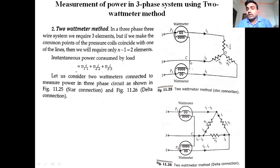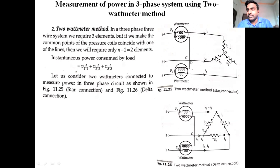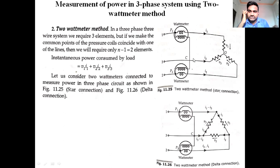According to Blondel's theorem, if we connect the common point of voltage elements on one of the lines, power measurement will be done with N minus 1 elements. So with N = 3, N minus 1 equals 2. The power measurement is analyzed with respect to 2 wattmeter elements.